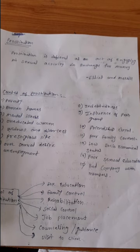Next is counseling and guidance. Due to counseling and guidance, the woman can be treated. Providing guidance and counseling on time, regularly, to the woman. Counseling and guidance should be provided to younger women and younger girls so that they can be prevented from prostitution.